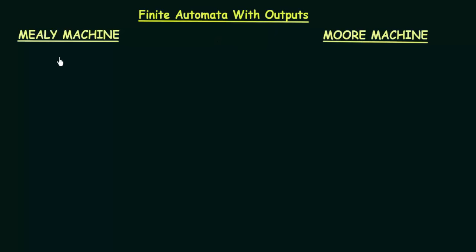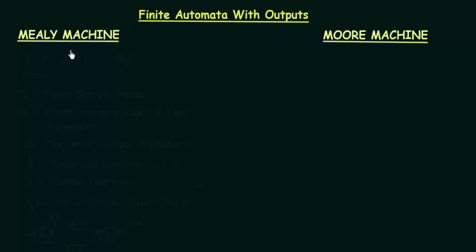There are two kinds of finite automata with outputs. One is the Mealy machine and another one is the Moore machine. In this lecture we will be trying to define these machines and find out the difference between them. Let's get started with the Mealy machine.